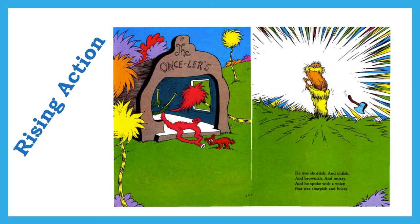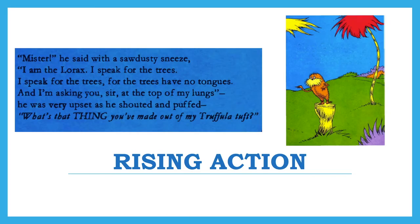Next we move on to the rising action, which begins with the first Truffula tree being cut down and used by the Onceler to make his first thneed. Immediately the Lorax pops up to ask why he's cutting down the trees. We see right away that the Onceler cares about industry and product, while the Lorax speaks out against the destruction of the Truffula forest. One of the first times he speaks, he says: 'I am the Lorax. I speak for the trees, for the trees have no tongues.'